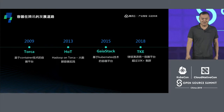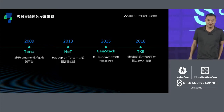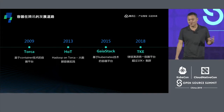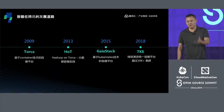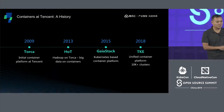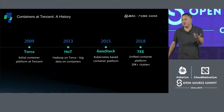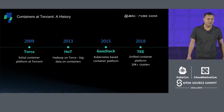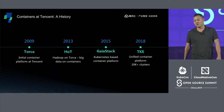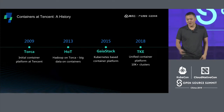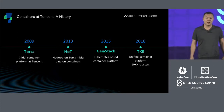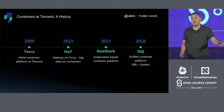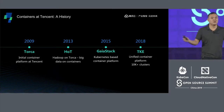The history of containers at Tencent. We started really early in 2009 with a system called Torca — our initial container platform. Around 2013, we moved our big data platform onto Torca, where the Hadoop on Torca project was born. In 2015, with the advent of Kubernetes and open source, we created GaiaStack, a Kubernetes-powered container platform. In 2018, we brought that onto the cloud as TKE — Tencent Kubernetes Engine — our unified container platform handling over 10,000 clusters.